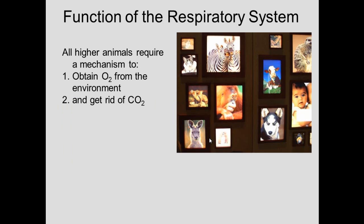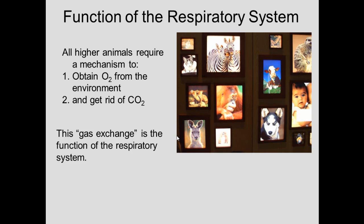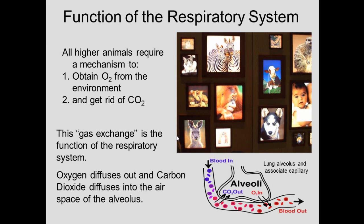The function of the respiratory system is gas exchange, and that's a requirement for higher animals. You have to have oxygen from the environment and get rid of carbon dioxide. Gas exchange occurs where oxygen diffuses out and carbon dioxide diffuses into the airspace of the alveolus. The blood capillary brings carbon dioxide-rich blood in, the carbon dioxide diffuses out into the airspace, and oxygen brought in by breathing diffuses into the blood.